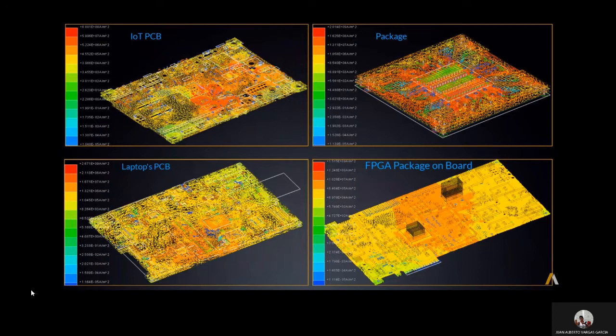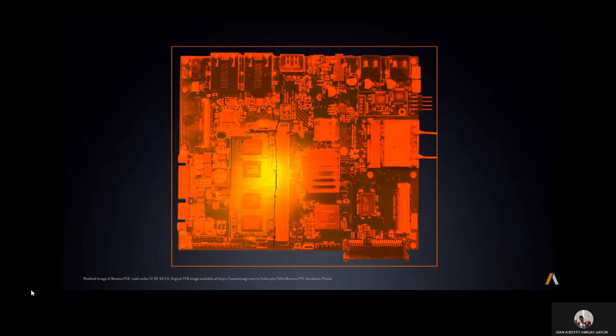ANSYS SI-WAVE can perform electrothermal simulation of complete boards and packages, and uses the results to predict electro-migration effects and interconnects. It estimates their lifespan and identifies potential points of failure, allowing designers to find reliability problems that might slip through the cracks before fabrication.